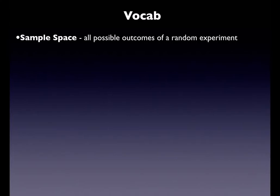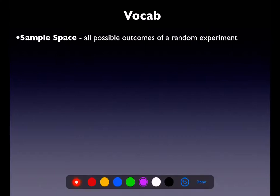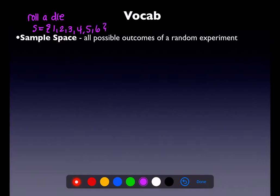The first thing we started with was a sample space — the list of all possible outcomes of an experiment. So let me pretend I'm going to roll a die. I'll let that be my experiment. A regular six-sided die, so my outcomes are 1, 2, 3, 4, 5, and 6.